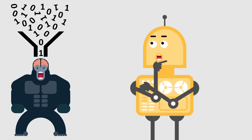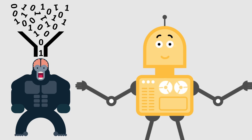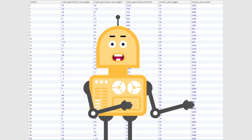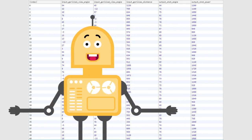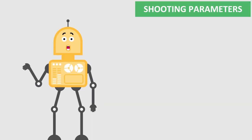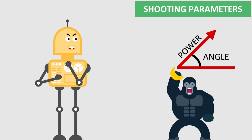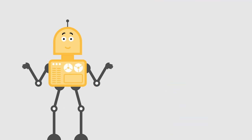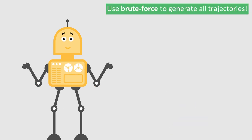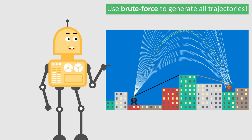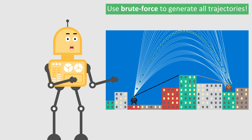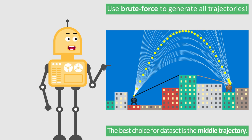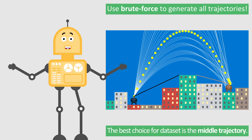As more data we have, the bigger is our knowledge base. In this case, we need a dataset of the most efficient shots for different gorilla positions on different building configurations. Furthermore, each shot is defined with its initial power and angle. The question is, how to get these parameters? We can use the brute force method to generate all possible banana trajectories for some random level configuration. Then we just need to select the best trajectory, and that should be the middle one. So let's collect data.